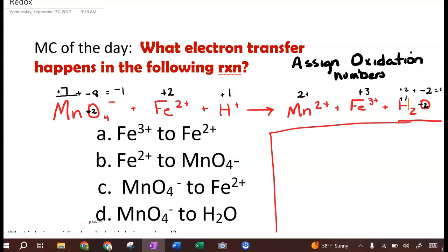The question asks, what electron transfer happens in the following reaction? You're taking electrons from the first and delivering it to the second. So here, manganese goes from plus 7 to a plus 2. Iron 2 becomes iron 3. And hydrogen stays at 1. And oxygen stays at 2. So I can't include anything with the water because there's no change in oxidation state for anything there. So I've eliminated choice D.